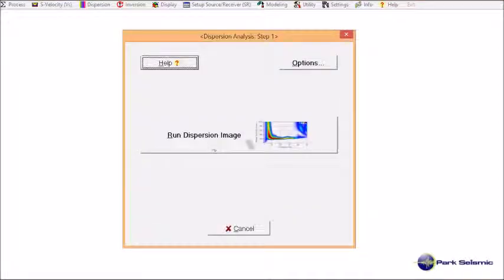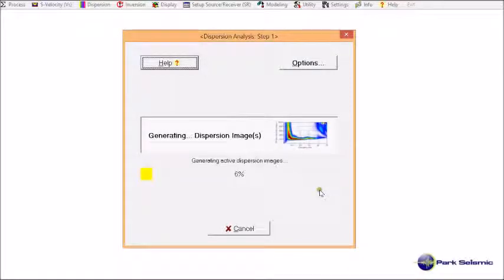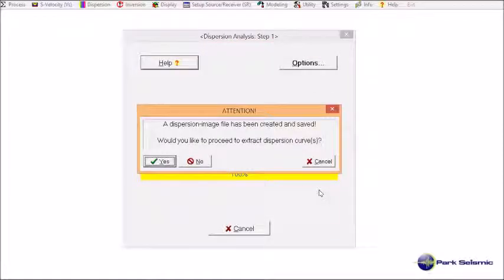And then I choose this VoidSR.DAT. And then this is going to generate dispersion images for all those 50 records. So, run. Now it's ready to move on to next step, which is extraction of dispersion curves. So, I click Yes.